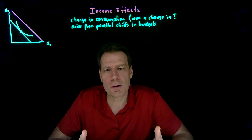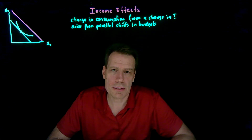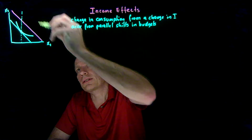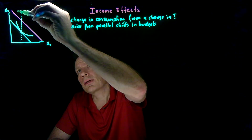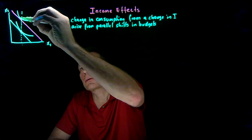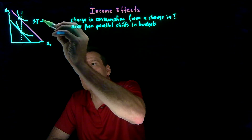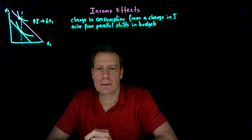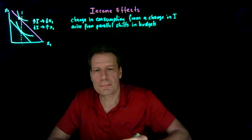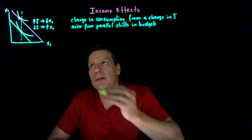We need to know something about how the indifference curves in her map relate to one another to determine where she's going to end up on that new magenta budget constraint. It could be, for instance, that as her income goes up, she decides to buy less of x1. If she buys less of x1, her indifference curve up here is going to be tangent to the left of the original quantity of x1. In that case, an increase in income caused a decrease in her consumption of x1, and a decrease in income would cause an increase in consumption of x1 — her consumption of x1 and income would be moving in opposite directions.